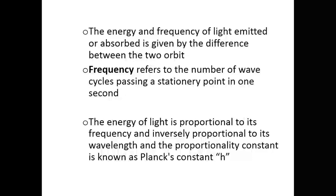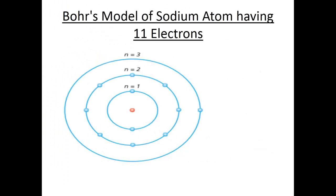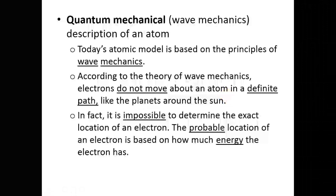The energy of light is directly proportional to frequency and inversely proportional to wavelength. The proportionality constant is known as Planck's constant. This is the model of a sodium atom — you can see how electrons are arranged at each energy level. The nucleus is inside, and then energy level number one, energy level number two, and energy level number three — that is Bohr's model.